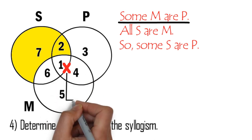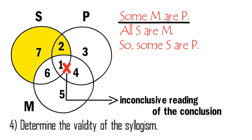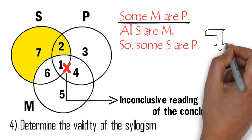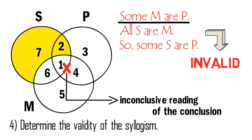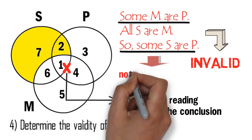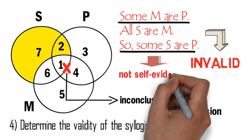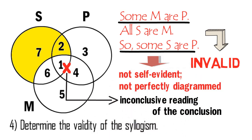Since the X is on the line that dissects areas 1 and 4, this gives us an inconclusive reading of the conclusion. For this reason, this syllogism is invalid — the conclusion is not self-evident and is not perfectly diagrammed.